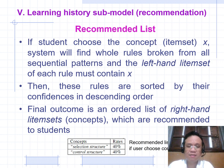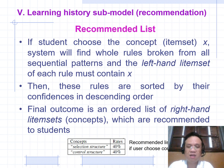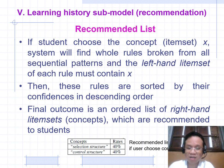Recommended List: If students complete concept item set X, the system finds all rules originating from the sequential pattern where the left-hand item set of each rule must contain X. Then the rules are sorted by confidence in descending order. The final outcome is an ordered list of right-hand item set concepts recommended to students. For example, if users complete concept X and OOP, the system recommends: selection structure 40%, control structure 40%.